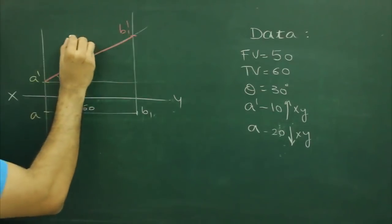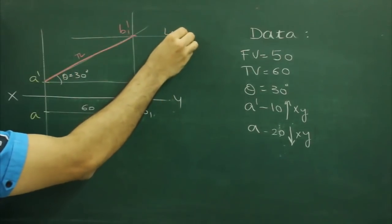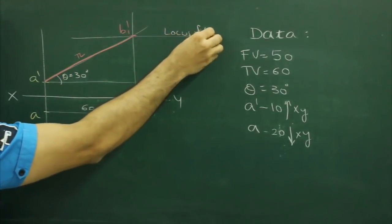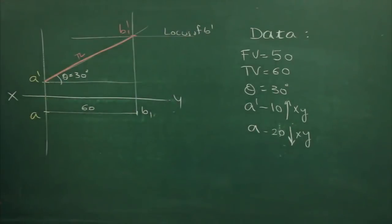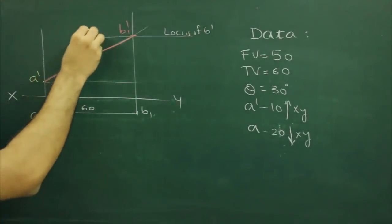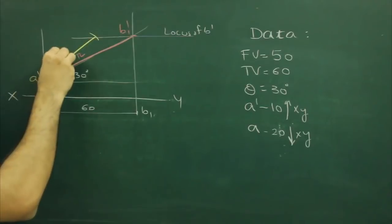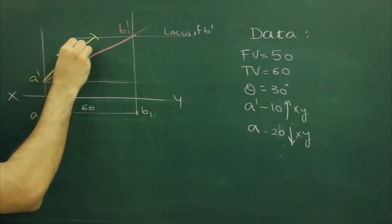After that draw locus of B'. We have front view as well, so from A' we can cut front view, that is 50mm.